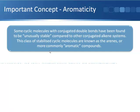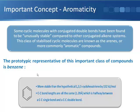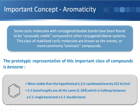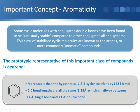Some cyclic conjugated systems are even more stable than you would expect for a series of conjugated double bonds. The prototypical example is benzene, which is found to be more stable than the hypothetical 1,3,5-cyclohexatriene by quite a lot — by 152 kJ/mol. The stability calculated from having three conjugated double bonds is actually not enough to account for what we observe; there's an extra element of stability.